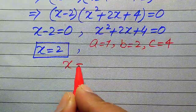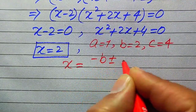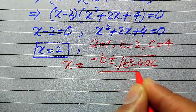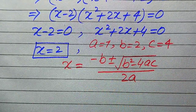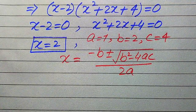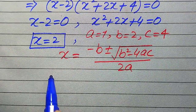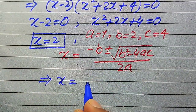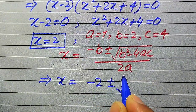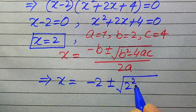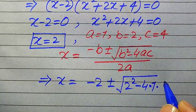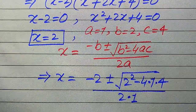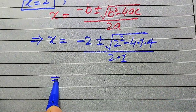The quadratic formula is x equals minus b plus or minus square root of (b squared minus 4ac), divided by 2a. Substituting the values: x equals minus 2 plus or minus square root of (2 squared minus 4 times 1 times 4), divided by 2 times 1.